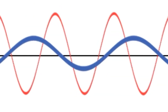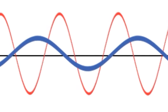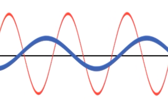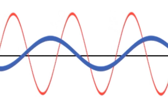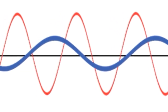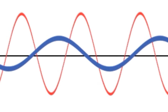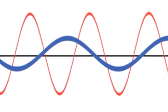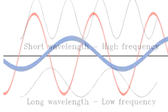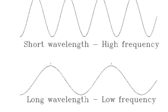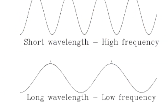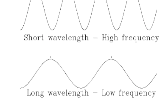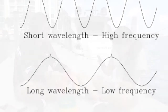Going a little deeper, each wave has a different frequency. Frequency is the number of waves that pass a fixed point per second, and they're measured in hertz. When a wave has a long wavelength, then its frequency is low, and when the wavelength is short, it has a higher frequency.